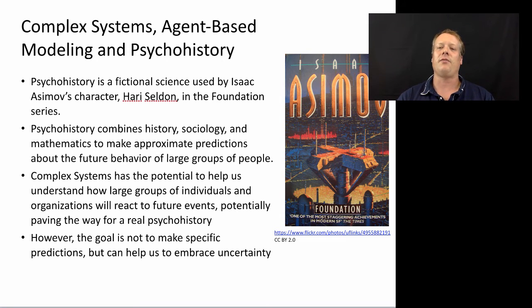And to talk about that thought, let me first describe a fictional science. And this is psychohistory. And it was used by Isaac Asimov's character, Hari Seldon, in the Foundation series to essentially combine history, sociology, and mathematics to make approximate predictions about the future behavior of large groups of people.